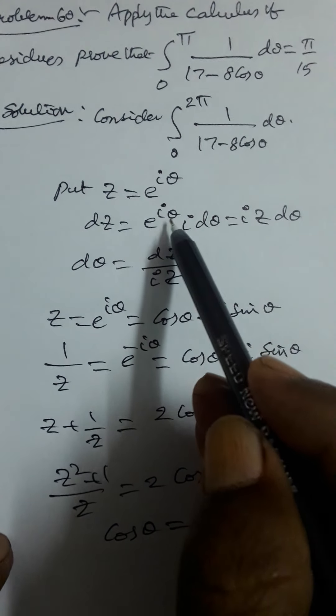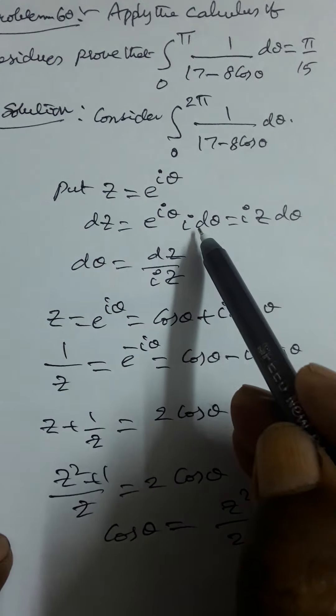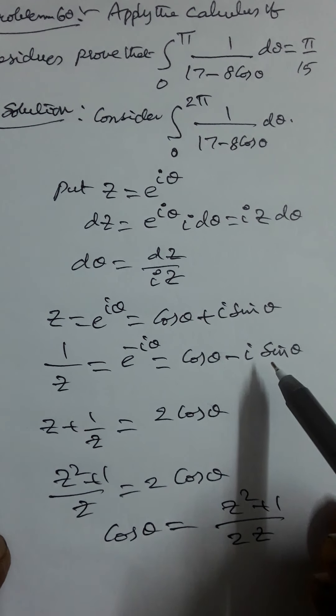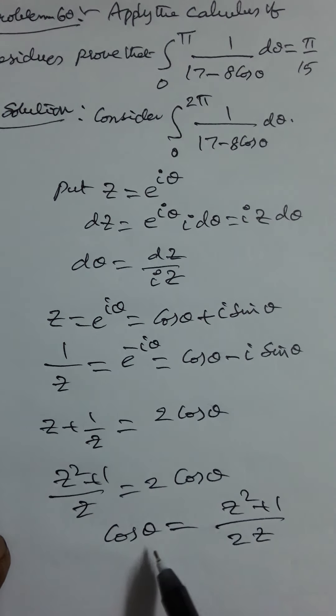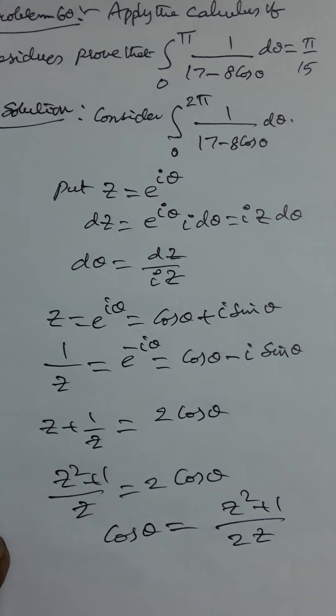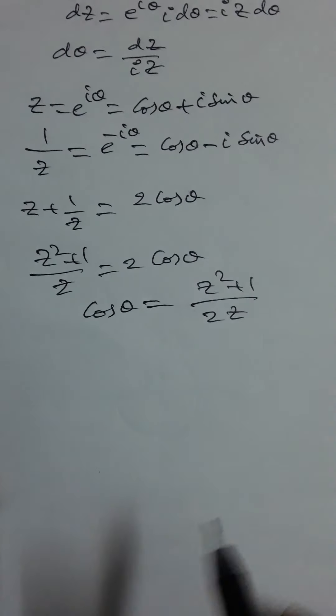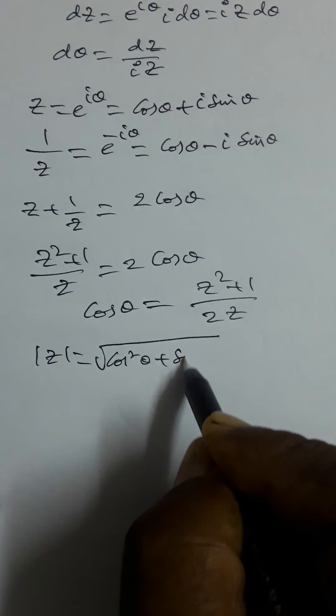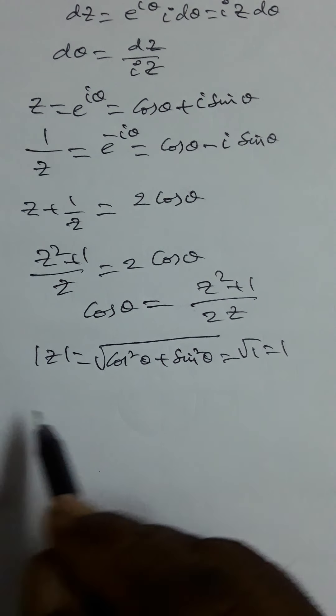Solution: Consider the integral from 0 to 2π of 1/(17 − 8 cosθ) dθ. Put z = e^(iθ), so dz = e^(iθ) · i dθ = iz dθ, giving dθ = dz/(iz). Also z = cosθ + i sinθ and 1/z = cosθ − i sinθ. Adding: z + 1/z = 2 cosθ, so cosθ = (z² + 1)/(2z).